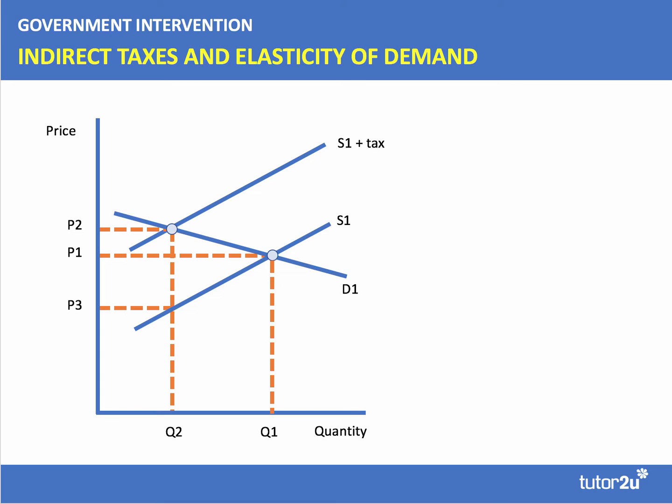The total amount of the tax is shown by the vertical distance P2 to P3, but the price in the market has only increased from P1 to P2. So we say that the burden of the tax falling on the consumer is shown by the green shaded area — that tax burden is always the difference between the original price P1 and the new price P2. The rest of the tax is paid by the supplier, shown by the orange shaded area.